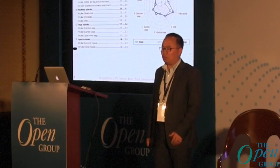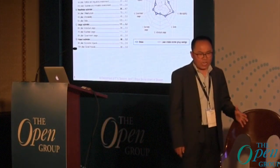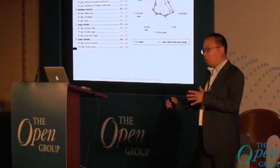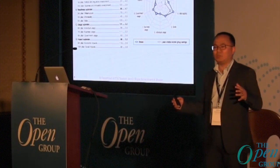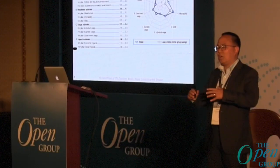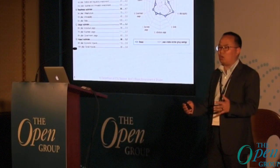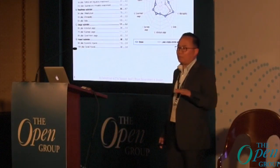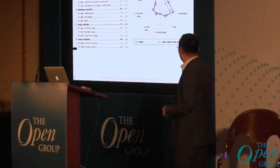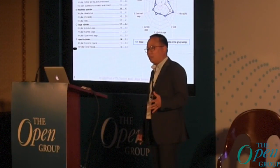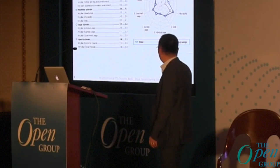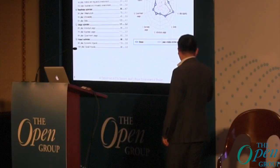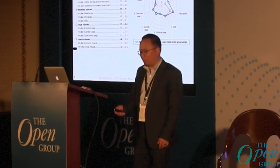Regarding Bhutan's Network Readiness Index: from an enterprise architecture perspective, it's all about aligning ICT initiatives to economic and socio-economic development, and how well your government enterprises are connected. According to that ranking, we are ranked 87th out of 139 countries. Among the low-middle-income group, based on the average, we are doing better than most.